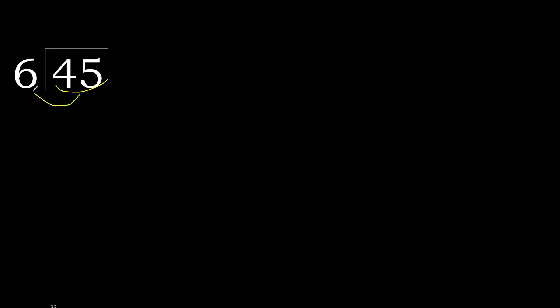45 is not less than 6, so we work with 45. 6 multiplied by which number is nearest to 45 but not greater? 6 multiplied by 8 is 48, which is greater. 6 multiplied by 7 is 42 — that is not greater, so 7 is correct.